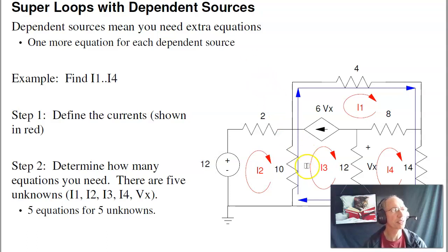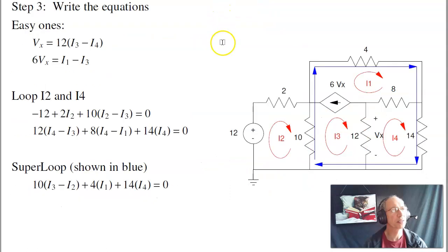The steps, just like before, are to find the currents. I went through I4. Determine how many equations I need. I need four loops plus the dependent source. I need five equations. Now start writing them. First equation is, here's Vx. Vx is 12(I3 - I4). This guy right here, 6Vx is I1 minus I3. I go around loop I2. That's the third equation. Around loop I4, fourth equation. And now I need a fifth equation. Again, a super loop. Here I chose this super loop. 10(I3 - I2) plus 4I1 plus 14I4. I'm back where I started, equals zero. Gives me five equations, five unknowns.